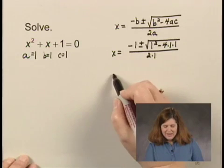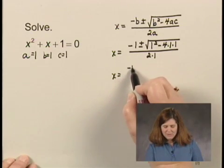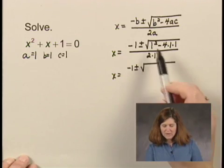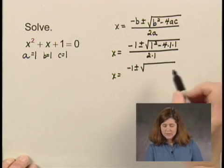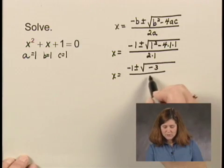Now we simplify. x equals negative 1 plus or minus the square root of, here we have 1 minus 4, so that's negative 3 all over 2.